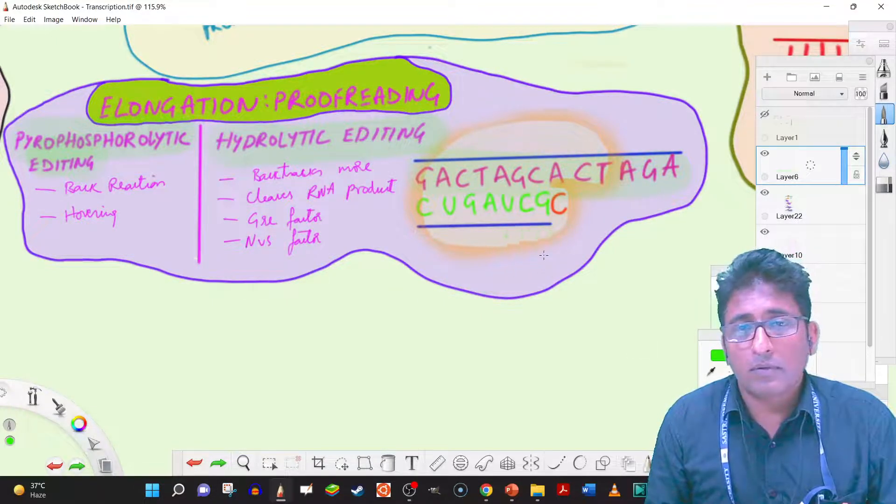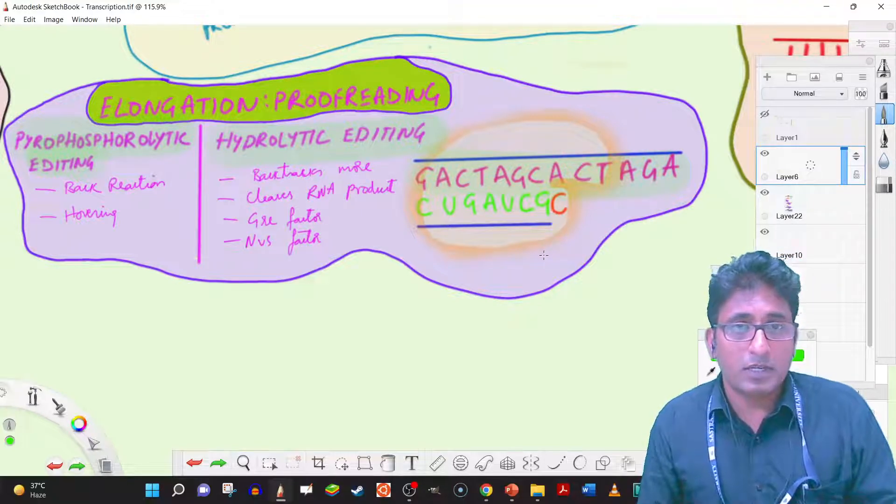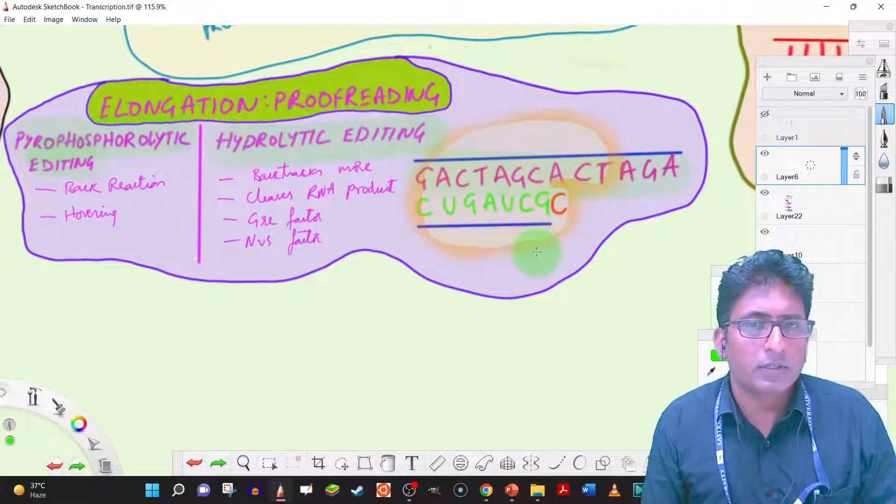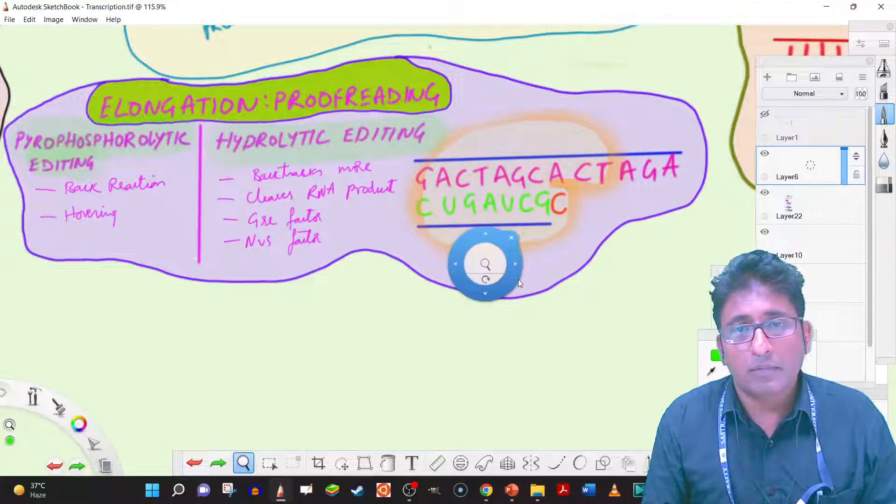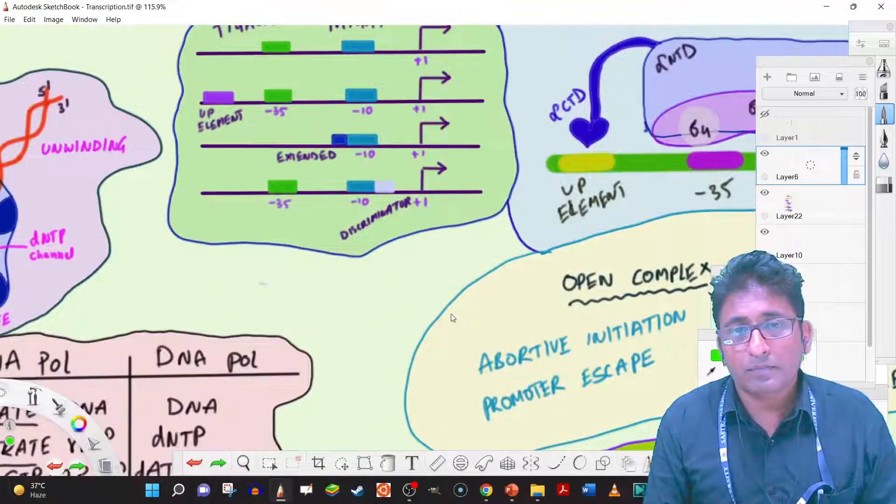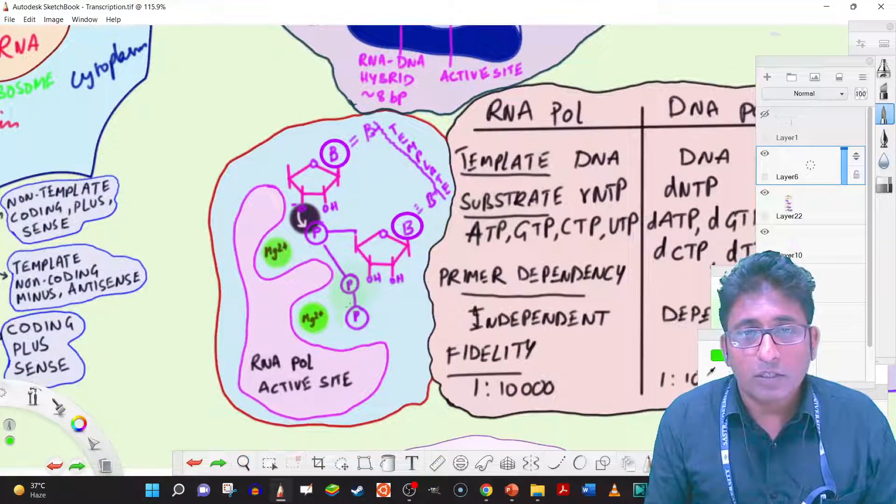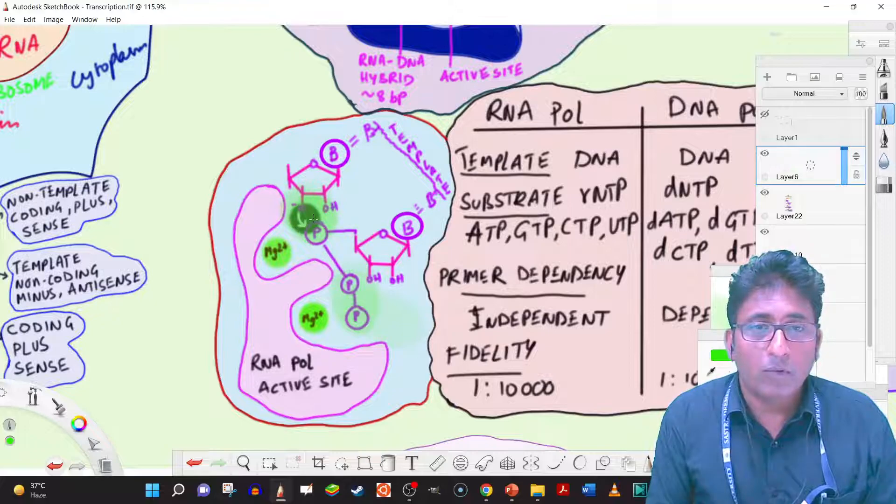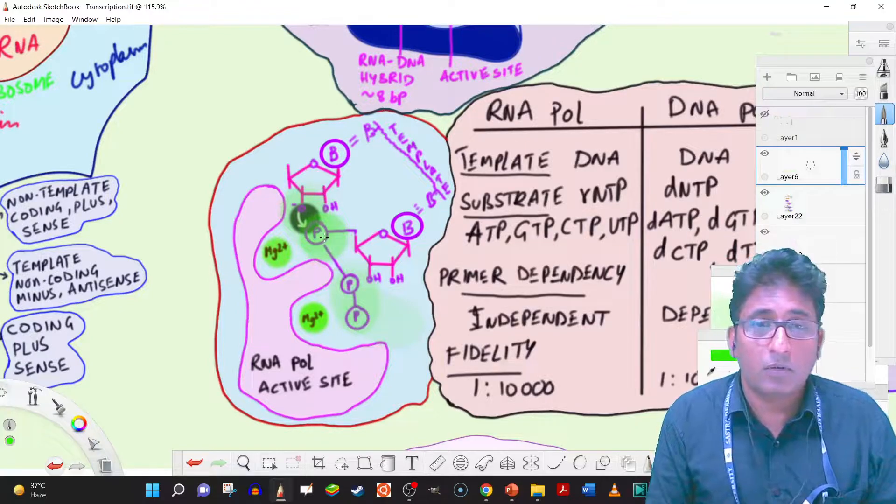So to remove, what RNA polymerase does is, there are two mechanisms as we said. The simple mechanism is to add back the pyrophosphate. If we can recollect the mechanism of how the polymerization occurs, we have seen that polymerization occurs by removing these two pyrophosphates and the 3' OH